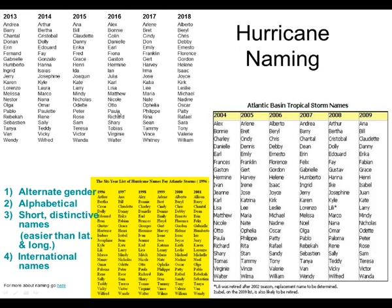You also see that there are quite a few international names — they're not all what you would typically call Americanized names. The reason for that is because hurricanes hit other countries, not just the United States. Some might hit Cuba or Jamaica or Mexico, so those countries get recognized as well. The United States gets the majority of the hurricanes, so we kind of get to pick the majority of the names.